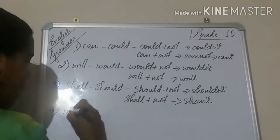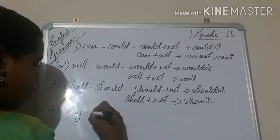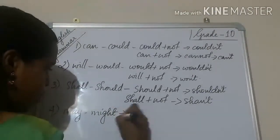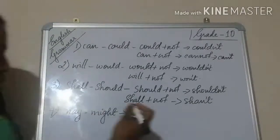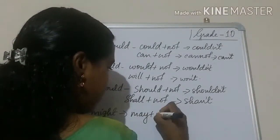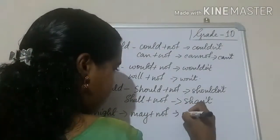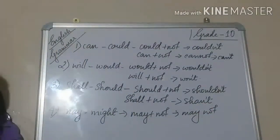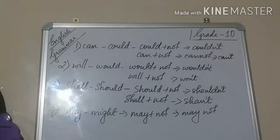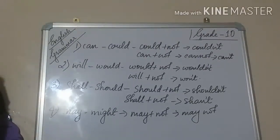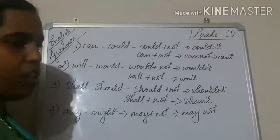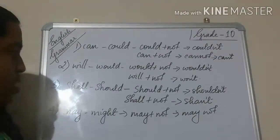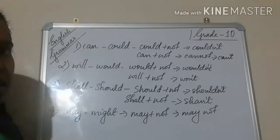The fourth one is may. For may, you can use it as might. May not — here there is no short form. It's just may plus not — that is may not. She may not come. She may not attend the marriage. That is, there is a suspicion — a doubtful situation. You have to express the doubtful situation, so you will use may not. She might not come. Again it's the same manner.